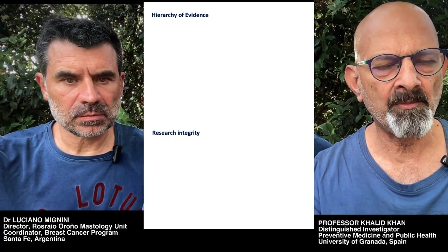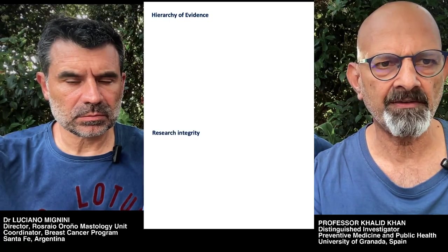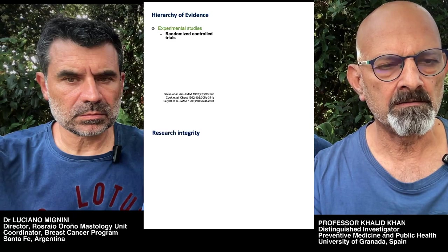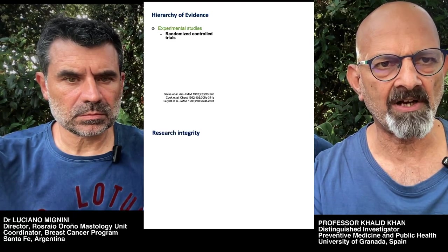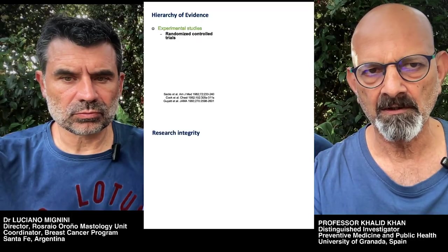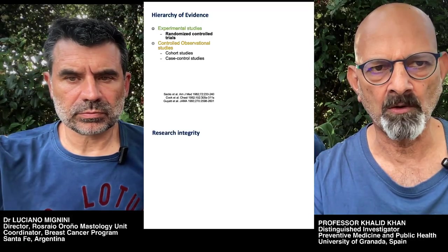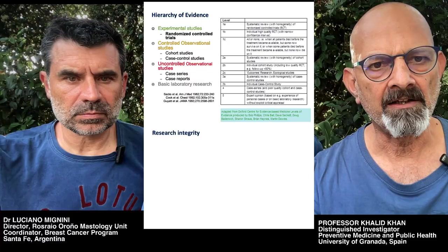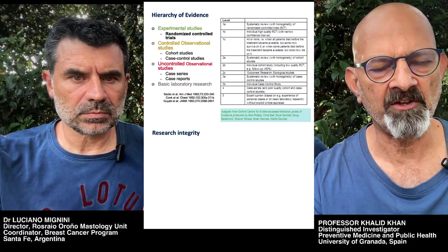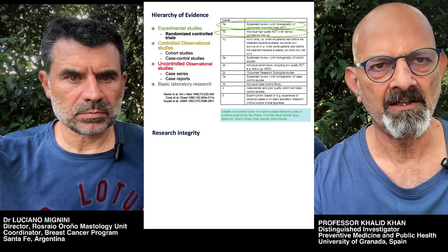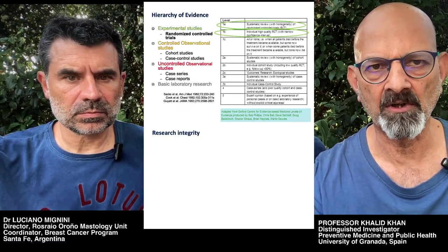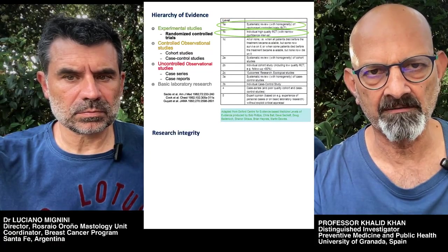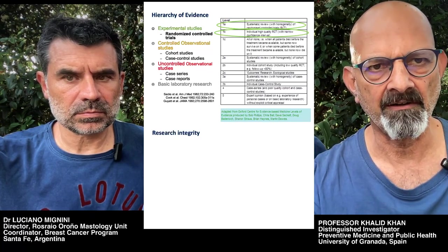To begin with, it's important to understand the hierarchy of evidence and research integrity. From evidence-based medicine, we know that randomized trials rank at the highest level, and below them rank other designs such as cohort studies, case-control studies, and uncontrolled observations. The University of Oxford Centre for Evidence-Based Medicine put out these levels of hierarchy, where systematic reviews and individual trials that use randomization rank at the top.